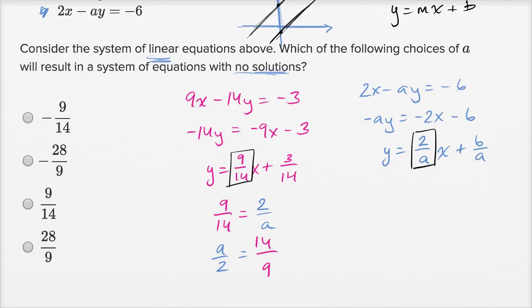And then multiply both sides by 2. And you're going to get a is equal to 28 over 9. A is going to be this right over here. This is 28 over 9.